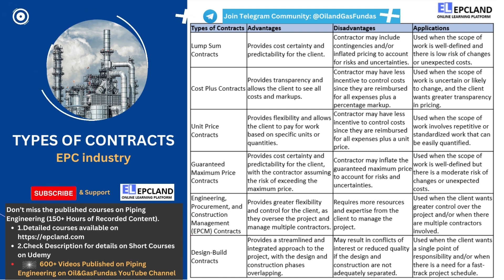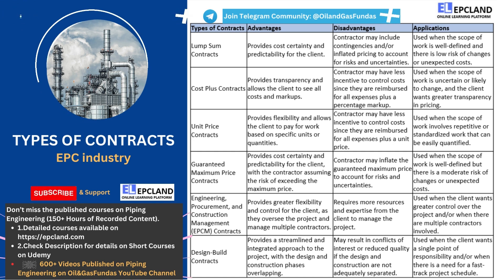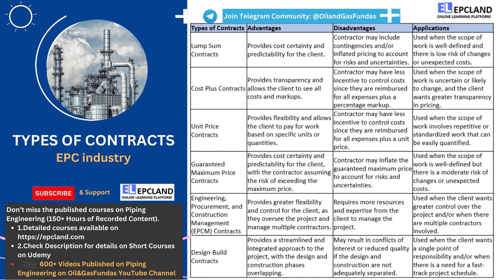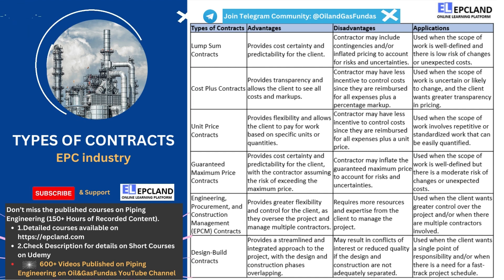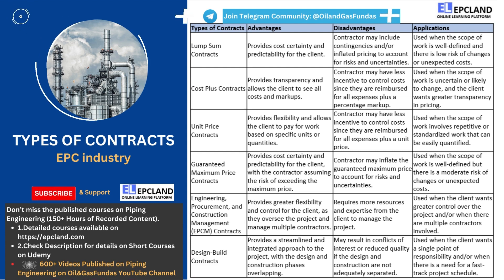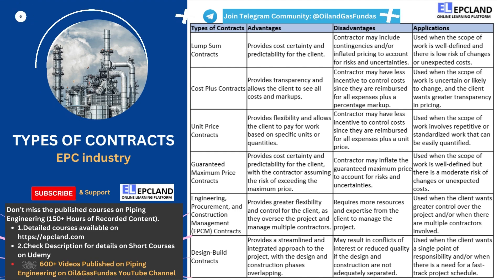That's it for today's video on the types of contracts used in the engineering, procurement, and construction industry. We hope that you found this information useful and informative. Remember, choosing the right type of contract is critical for the success of your project, and it is important to carefully evaluate the advantages and disadvantages of each option. If you have any questions or comments, please feel free to leave them in the comments section below. Thank you for watching and don't forget to like, share, and subscribe for more videos on the EPC industry and other related topics.